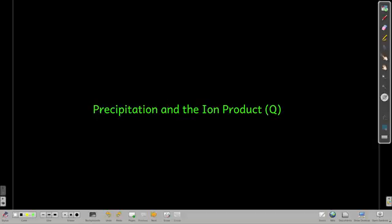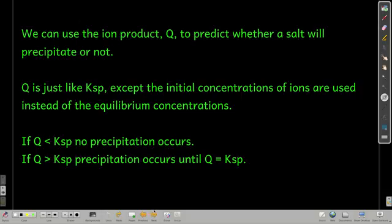In this module, we're going to talk about precipitation, Ksp, and something called the ion product, Q. Now Q, it's just like we've seen Q before, the reaction quotient in equilibrium, and it's the same thing.